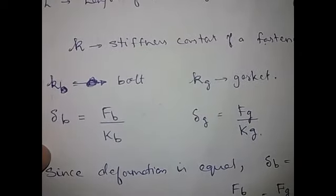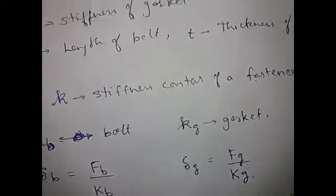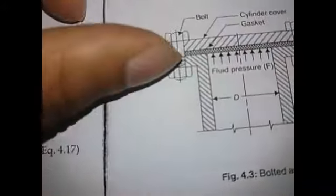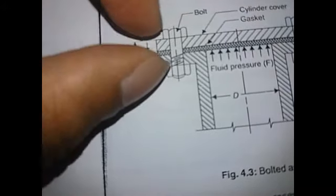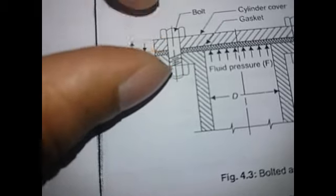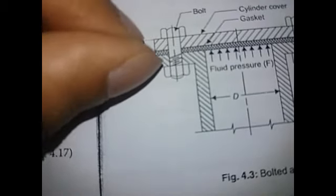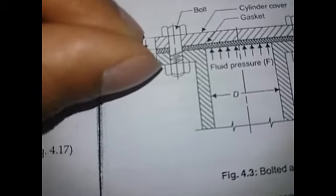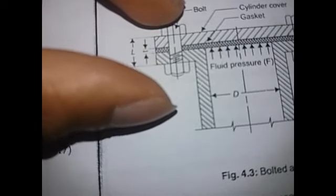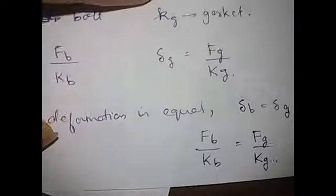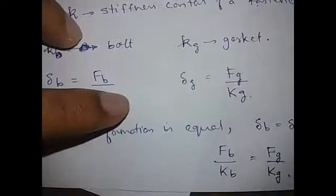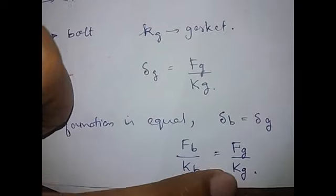We will expand on the two centimeters — the two centimeters are the same. The deformation area is the same. It is the same: the deformation area is the same. Now, the deformation area is FB divided by KB, minus FG divided by KG.